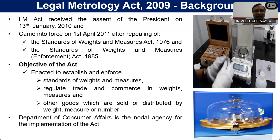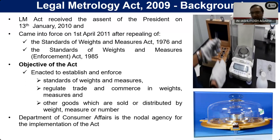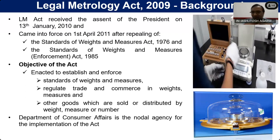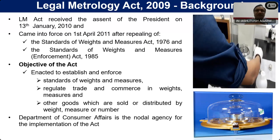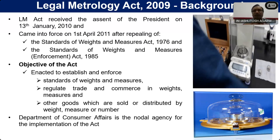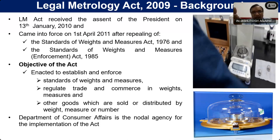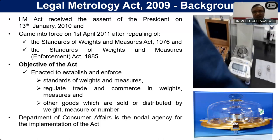The Legal Metrology Act came into force from 1st April 2011, after repealing the Standards of Weights and Measures Act 1976 and the Standards of Weights and Measures (Enforcement) Act 1985. The old Acts 76 and 85 were beautifully drafted, but the new Legal Metrology Act also has beauty — it has only 57 sections covering the whole of those two earlier acts. Being a small act, it is just a skeleton. The rest is covered under the rules framed under the Act. The objective is to establish and enforce standards of weights and measures — kg, meter, liter, centimeter, seconds — and how a weighing and measuring instrument will perform, be constructed, manufactured, tested, and verified.